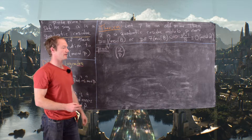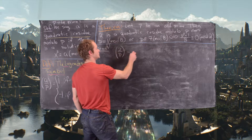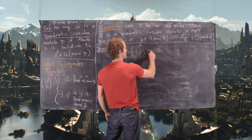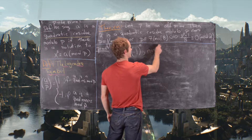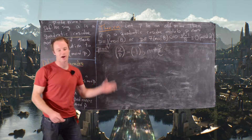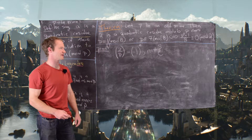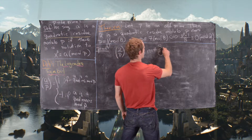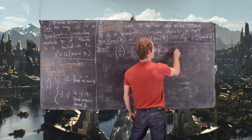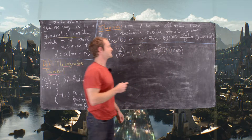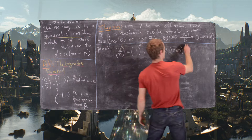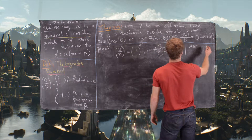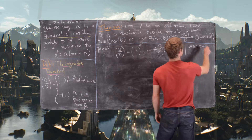Recall by Gauss's Lemma — I have a separate video on this — that the Legendre symbol (2/p) equals (−1)^n, where n is the number of elements in the set of values {2k mod p} that are greater than p/2, with k ranging from 1 to (p−1)/2.